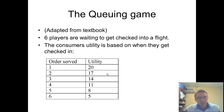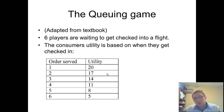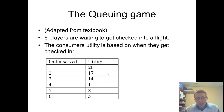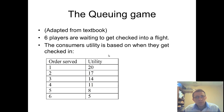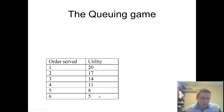The queuing game involves six people waiting to get checked into a flight. Consumers' utility is based on when they get checked in — everybody wants to be checked in first. Another similar example: Southwest Airlines used to allow everybody to go to the front and wait in line whenever, splitting into A, B, and C boarding groups. If you wanted a preferred seat, you might get in line really early, but waiting in line is no fun. Players want to be served first — they get higher utility when served first, lower utility when served last.